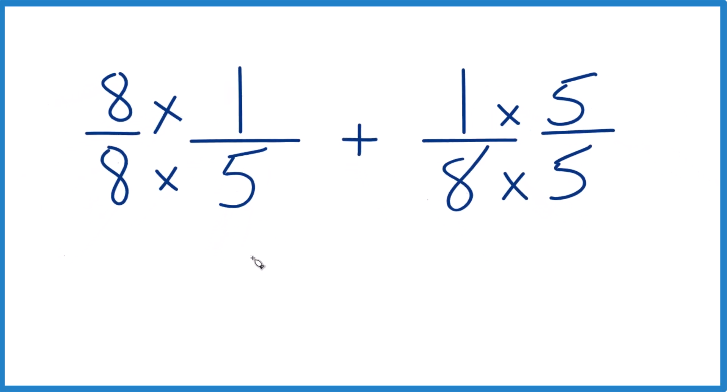And now 8 times 1, that's 8. 8 times 5 is 40. Over here, we have 1 times 5, that's 5. And 8 times 5, that's 40 again.